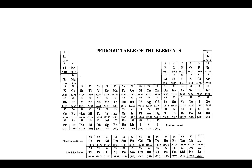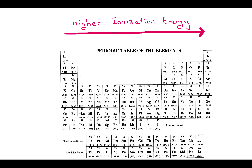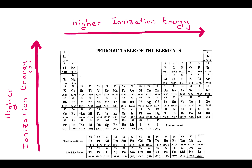You can get a trend for ionization energy from the periodic table. The ionization energy increases as you go to the right on the periodic table and as you go up on the periodic table. So as you go up and to the right, it gets harder to rip an electron off of an atom.